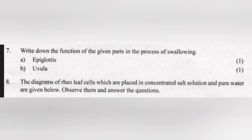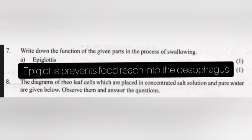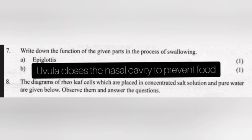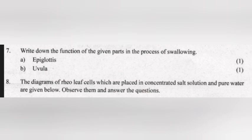Question 7: Write down the function of the given parts in the process of swallowing. A — Epiglottis. B — Uvula. Answer: A — Epiglottis prevents food from reaching the trachea. B — Uvula closes the nasal cavity to prevent food entry.